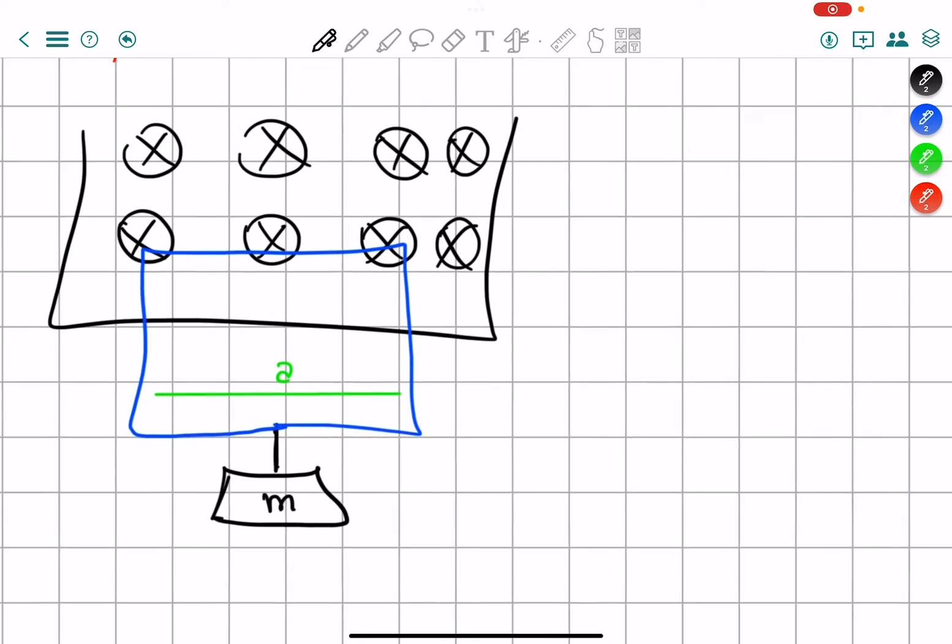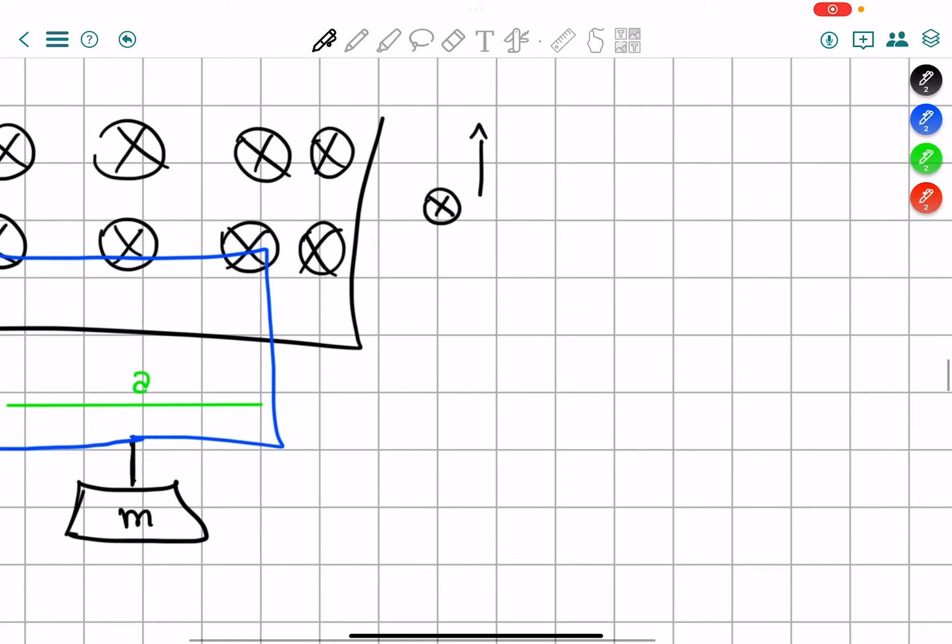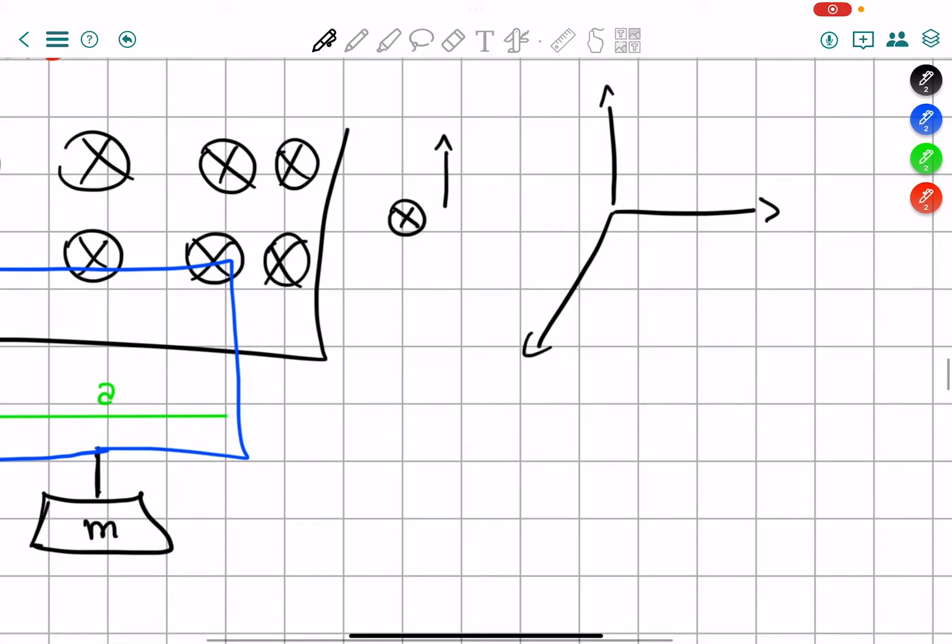So now we know that the magnetic field points inside of the page and we want a force that goes up. So if we were to do it in x, y, and z system we have the magnetic field that points inside of the page and so I just call this z, y, and x and so the magnetic field points inside of the page.